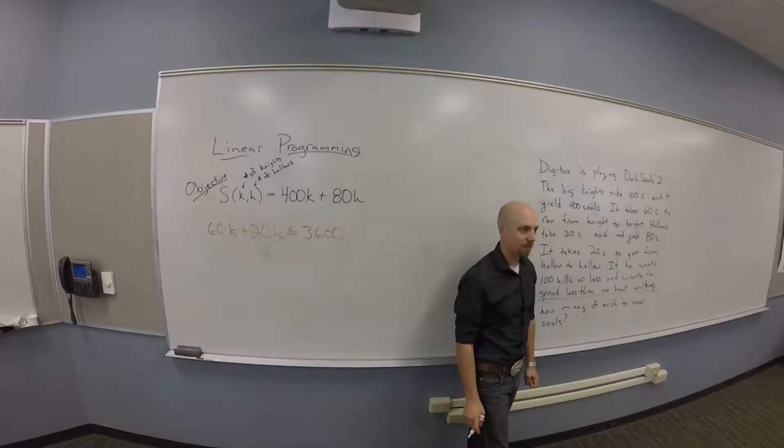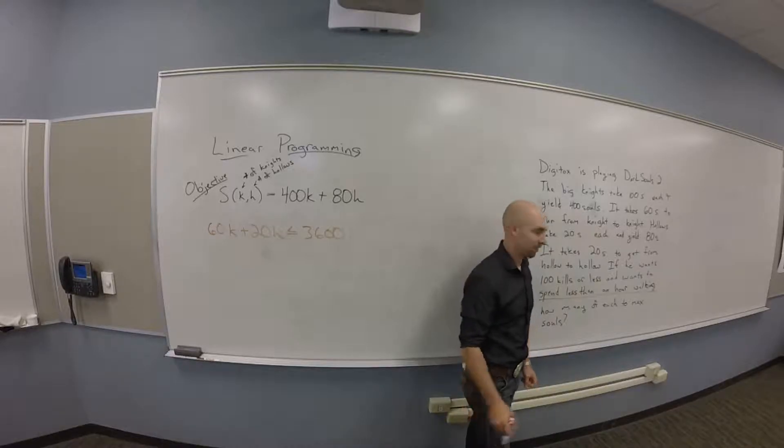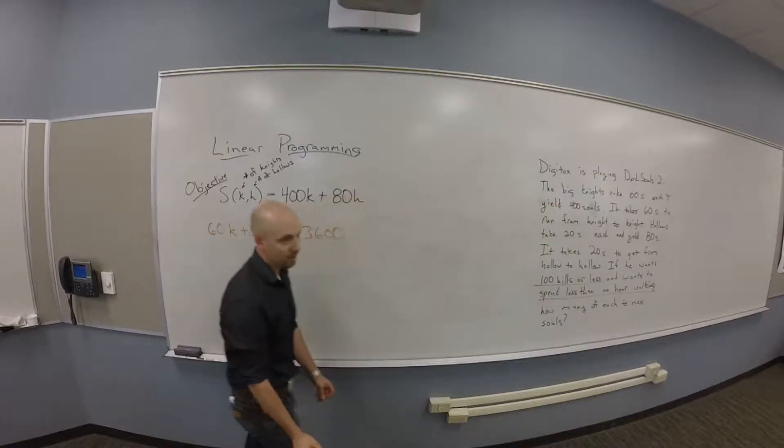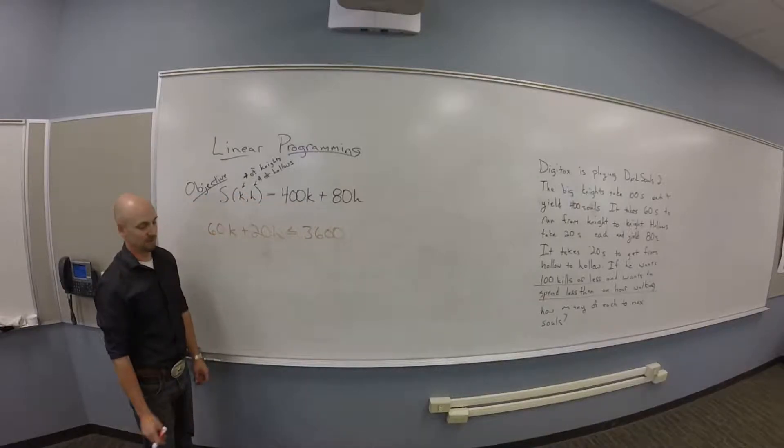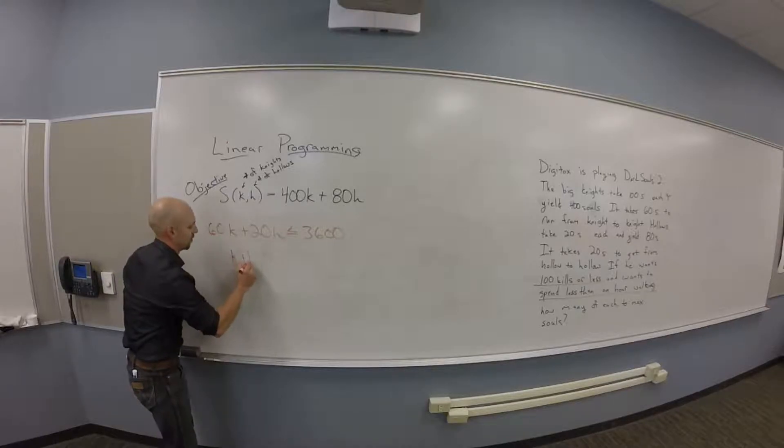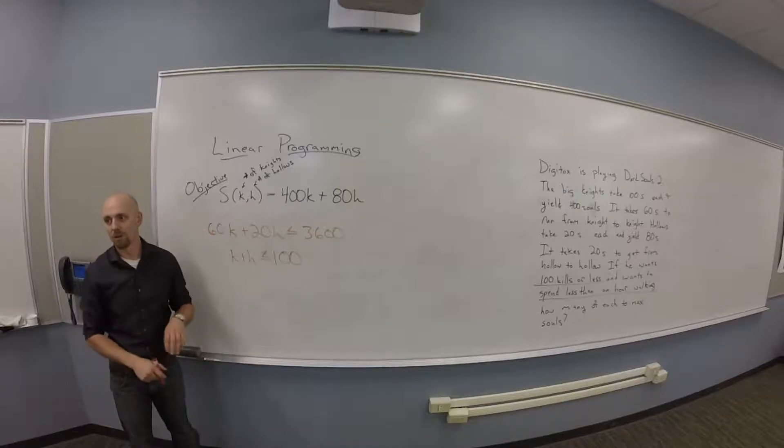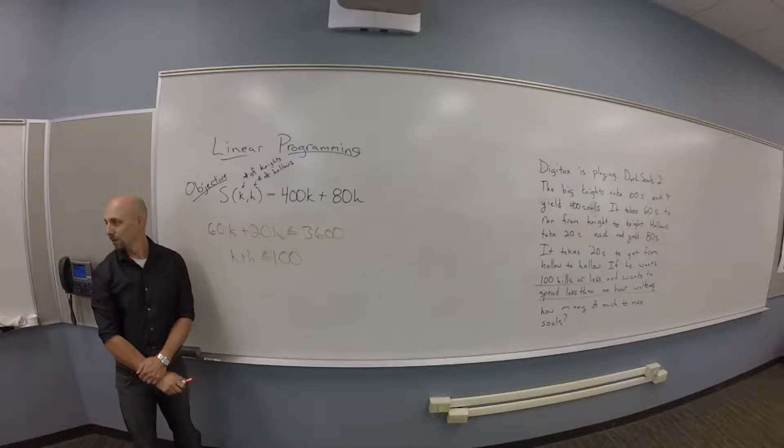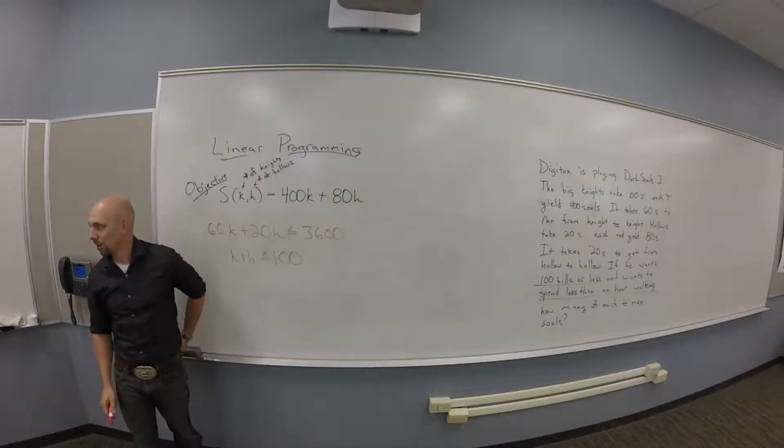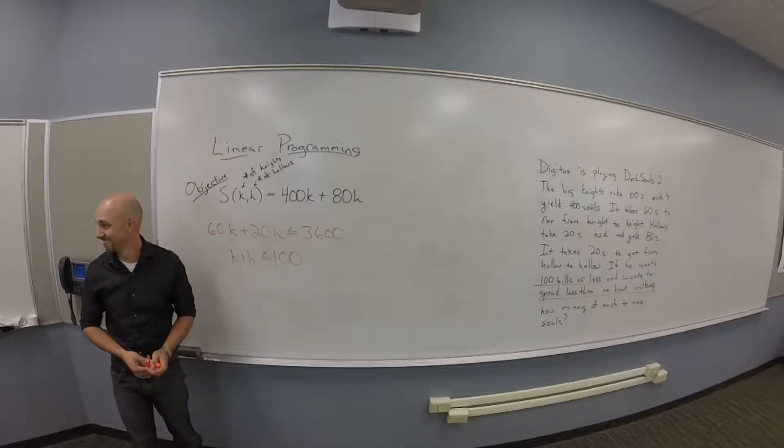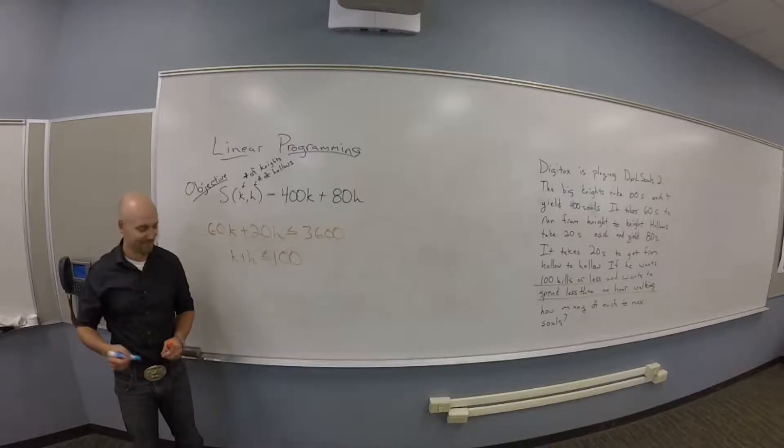What's your other constraint here? 100 kills or less. How do you phrase that? K plus H is less than or equal to 100. We don't care how long each one takes to kill. Enjoying the game.